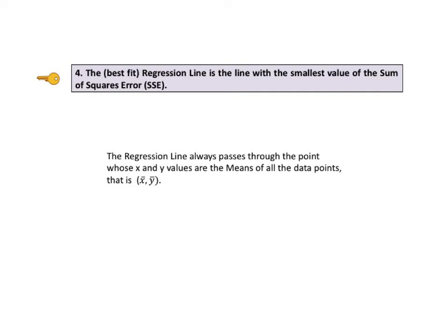Key to understanding number 4 says the best fit regression line is the line with the smallest value of the sum of squares error, SSE. There are a number of methods for calculating a line which best fits the data. The one most commonly used is the least squares method. As explained in the regression part 1 article, sum of squares error, SSE, is the variation in y which is not modeled by the regression line. The line with the smallest value of SSE is the regression line. It is also called the best fit line or the line of least squares.